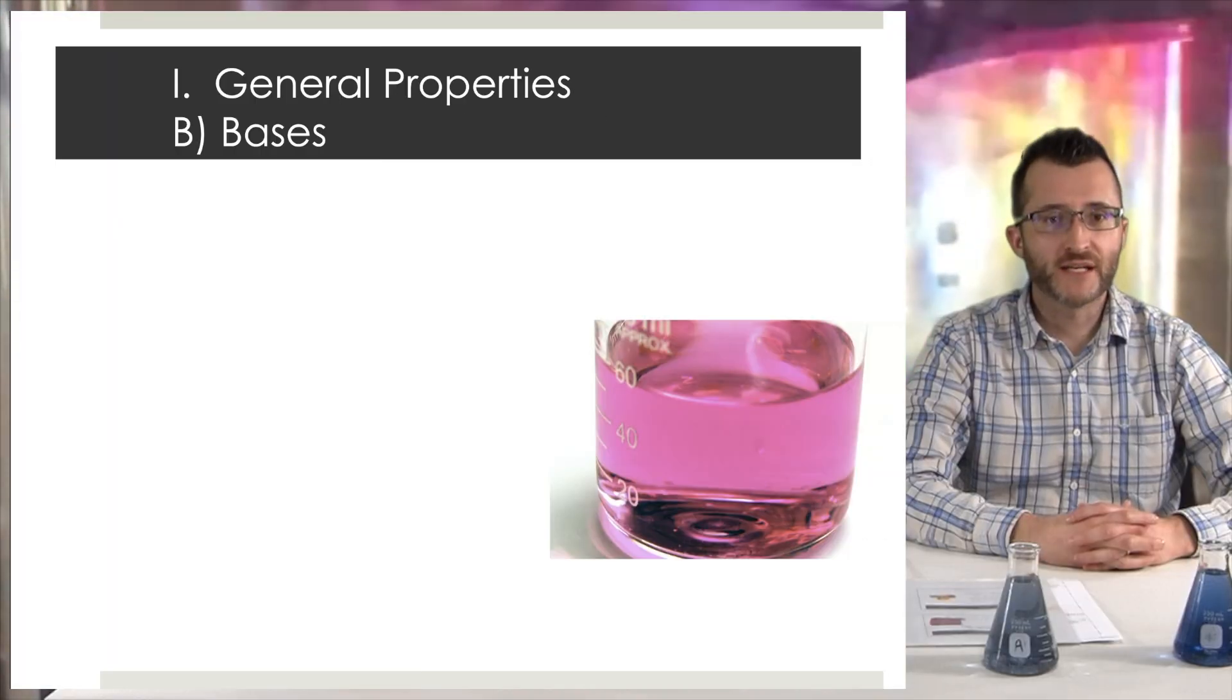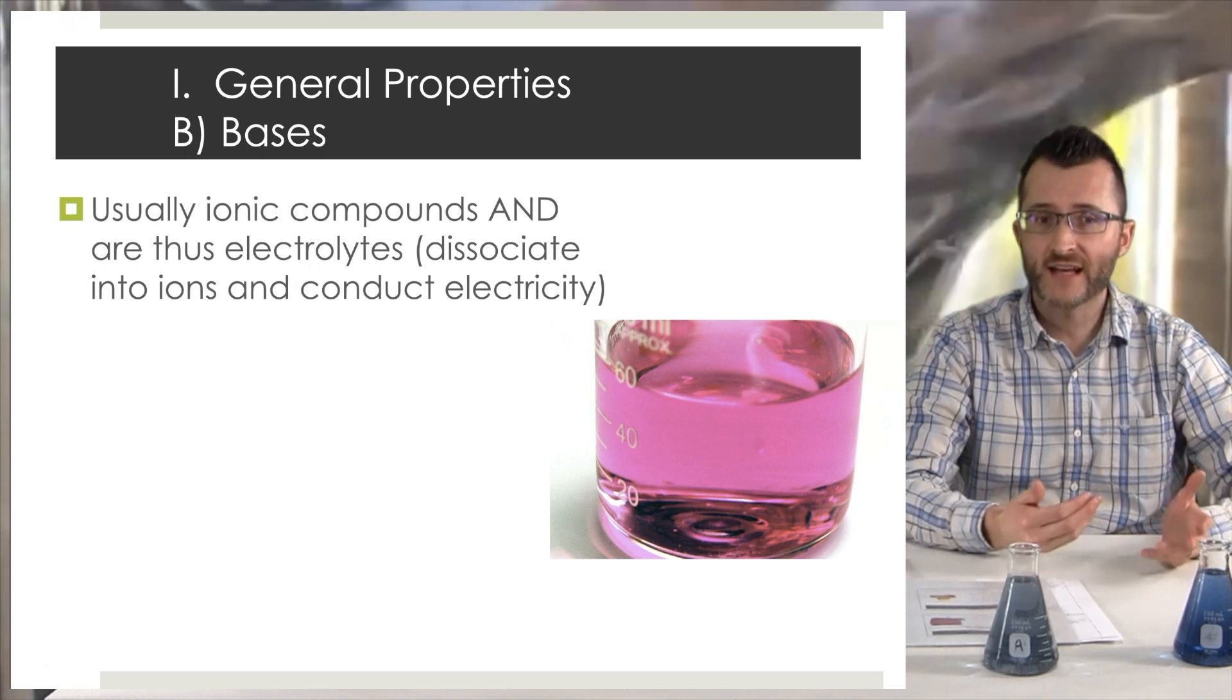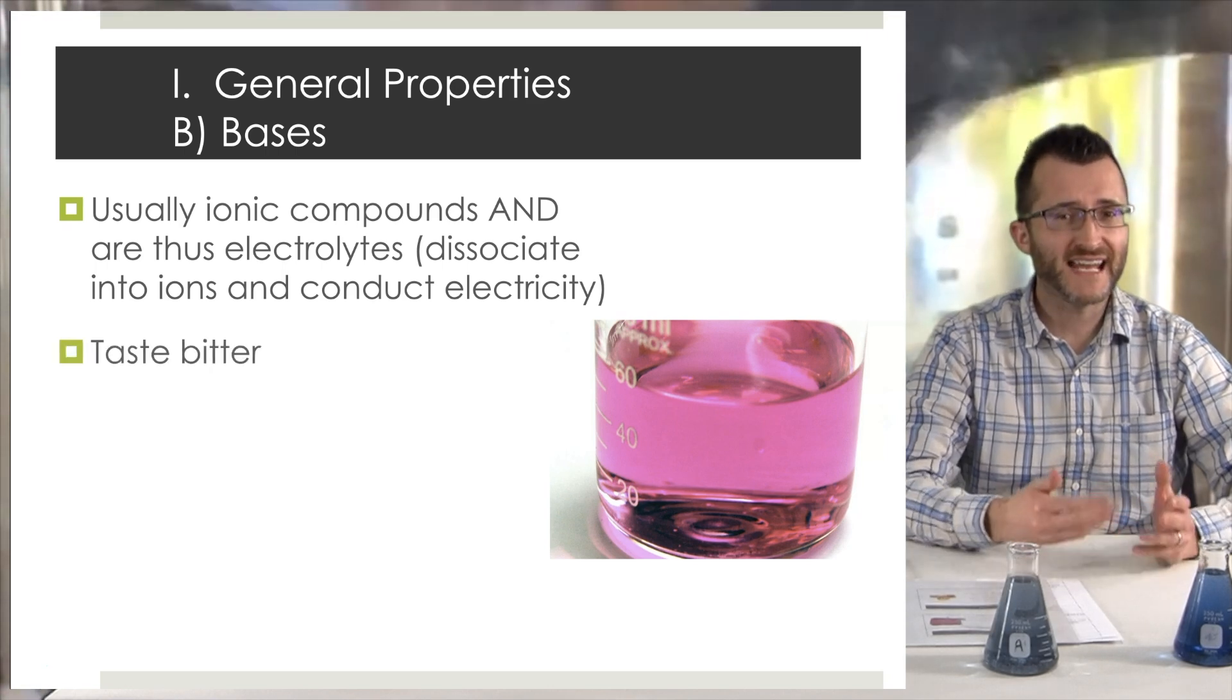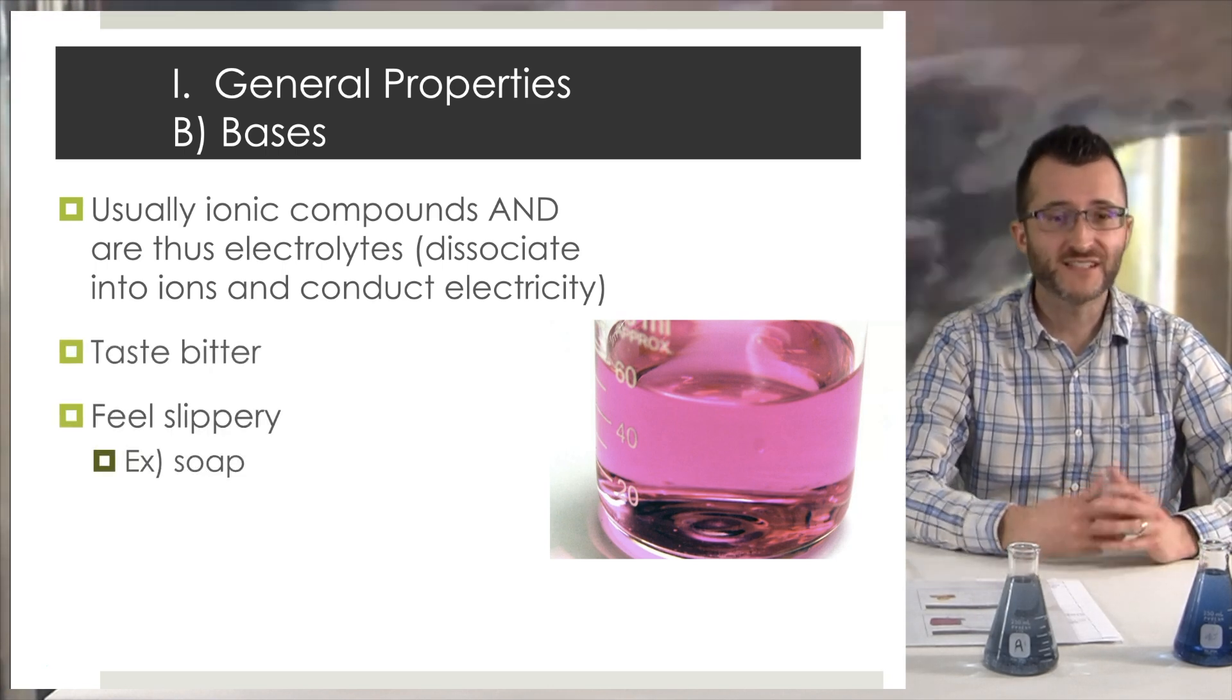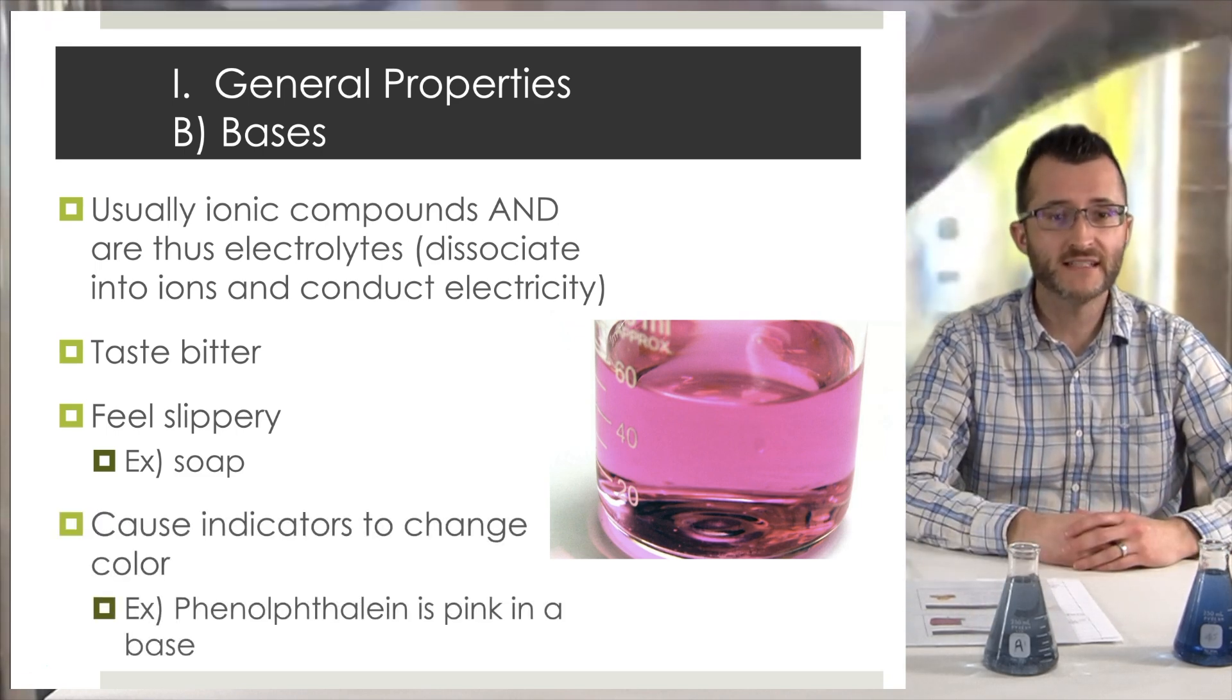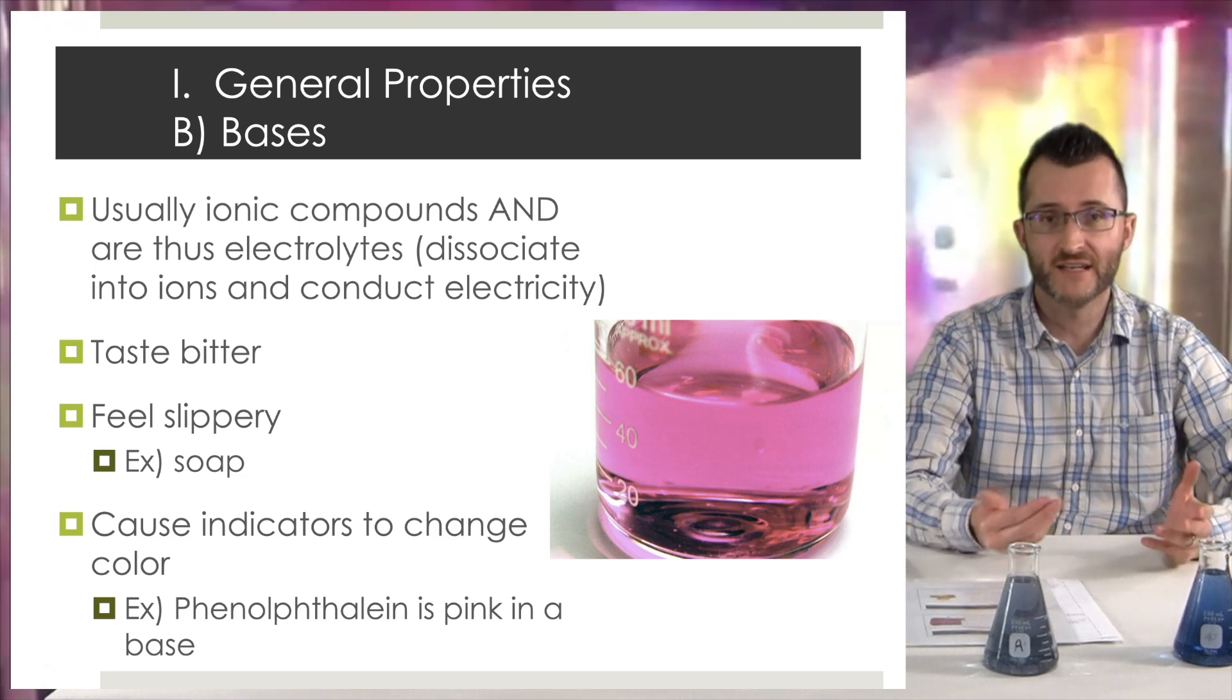General properties, bases. Bases are usually ionic compounds and are thus electrolytes. They dissociate into ions and conduct electricity. Bases taste bitter. Bases feel slippery. An example would be soap. They also cause indicators to change color. For example, phenolphthalein is pink in a base.